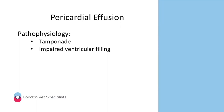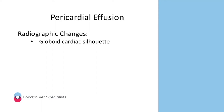The fluid accumulating within the pericardium prevents the right atrium from completely filling, resulting in cardiac tamponade and impaired ventricular filling. On thoracic radiographs, the pericardial effusion appears as an enlarged heart with a quite globoid shape — the heart will look big and round.